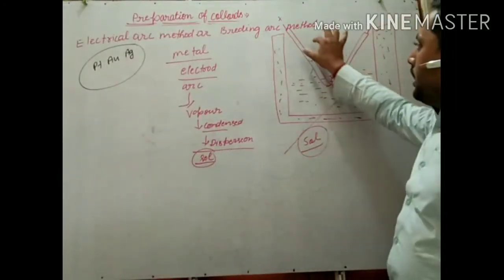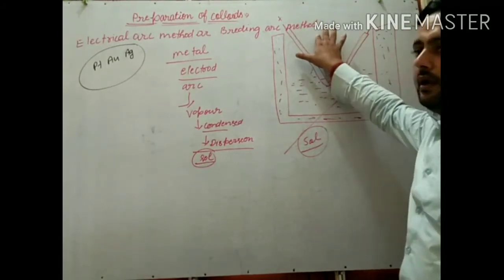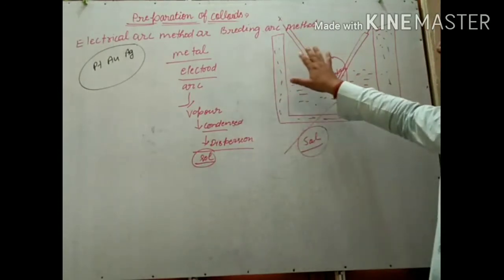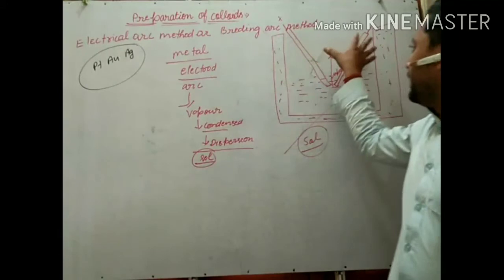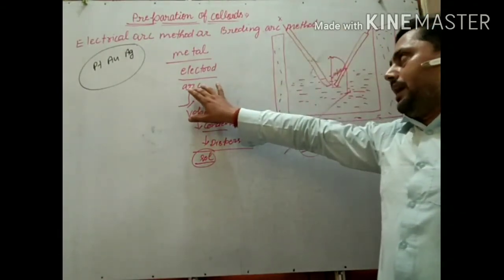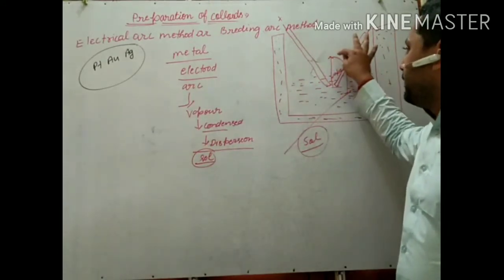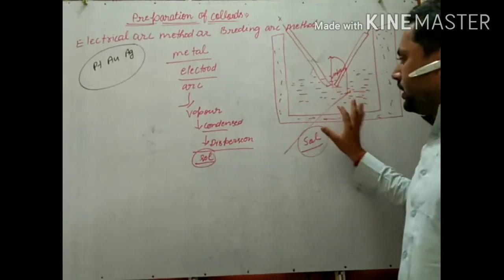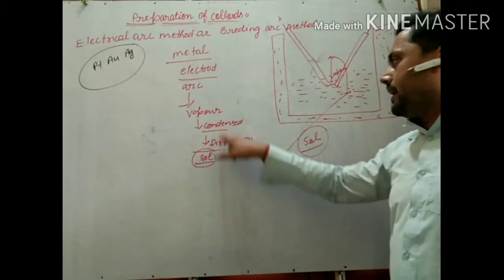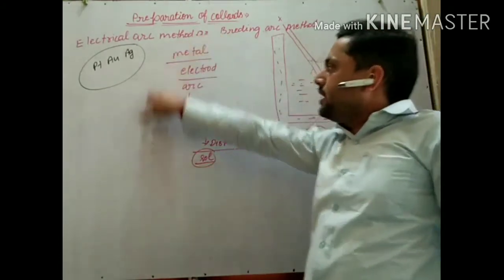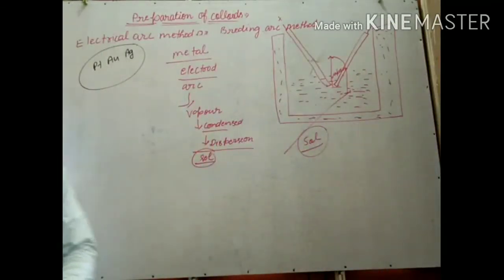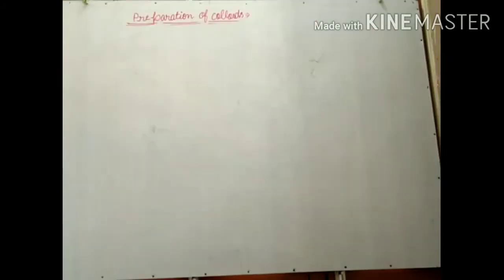This is the process for the electric arc method, also called Bredig's arc method. You have to remember that electrodes of the metal will be taken — whichever metal solution we are going to prepare. To summarize: we take metal electrodes, and due to the electric arc, the metal melts and changes into vapour. This vapour, when it condenses, changes into liquid and gets mixed with the dispersion medium, and the sol is formed. This method is especially used for preparation of platinum, gold, and silver colloidal solutions.